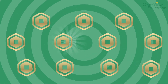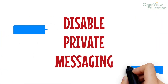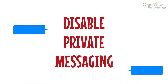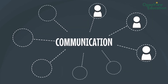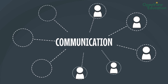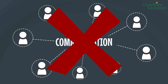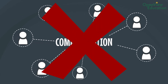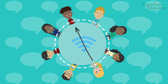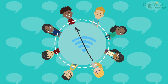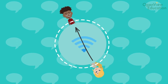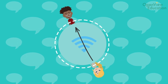Disable private messaging. One of the biggest risks of Roblox is the contact it allows through communication with strangers. However, Roblox allows you to turn off private messaging. Doing this means that your child will only be able to receive messages from people in their friends list. So turn off private messaging.